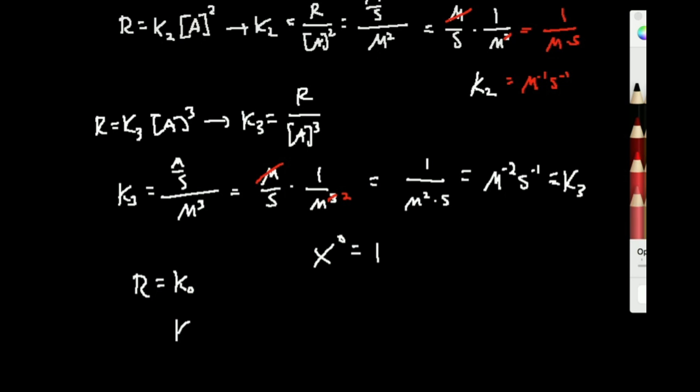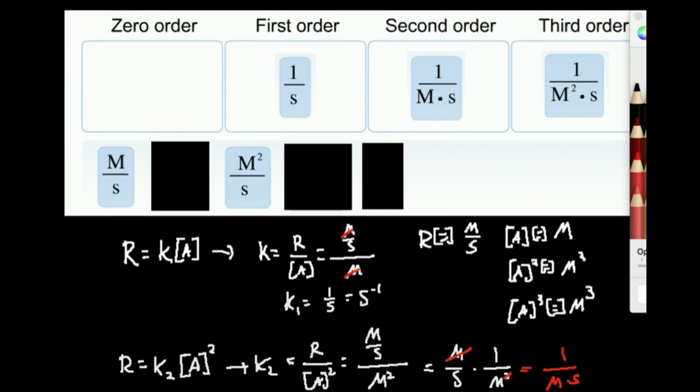Okay, let's just plug in numbers. Zero order rate constant is equal to the rate. The units of rate are molar per second. So for a zeroth order reaction, the rate constant has units of molar per second. And sure enough, I see one of those. There you go.